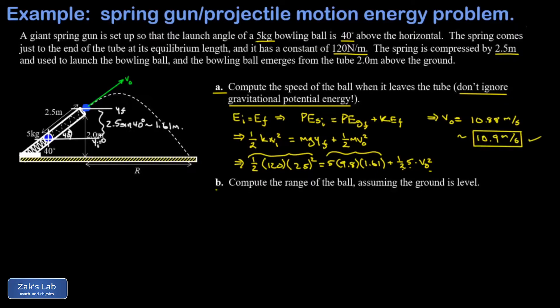And then in part b, I want to compute the range of the ball. This is just a classic projectile motion problem. I have a launch velocity that's known. I'll go ahead and call it 10.88 meters per second so I don't compound the rounding error more than necessary. I know the initial launch height that's given in the diagram, that's an initial height of two meters. And I want to get the range: how far does it go horizontally before it hits the ground?